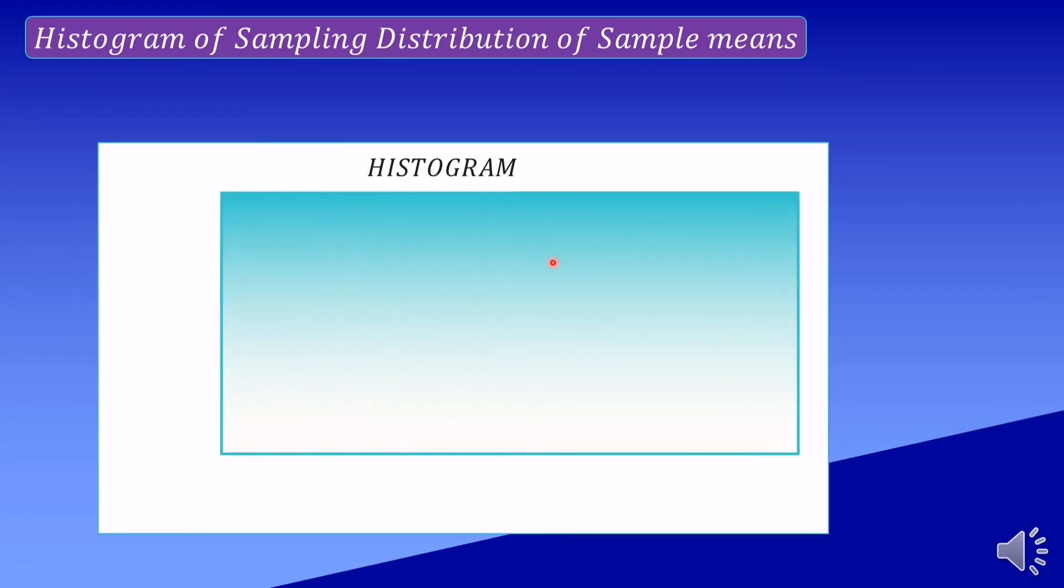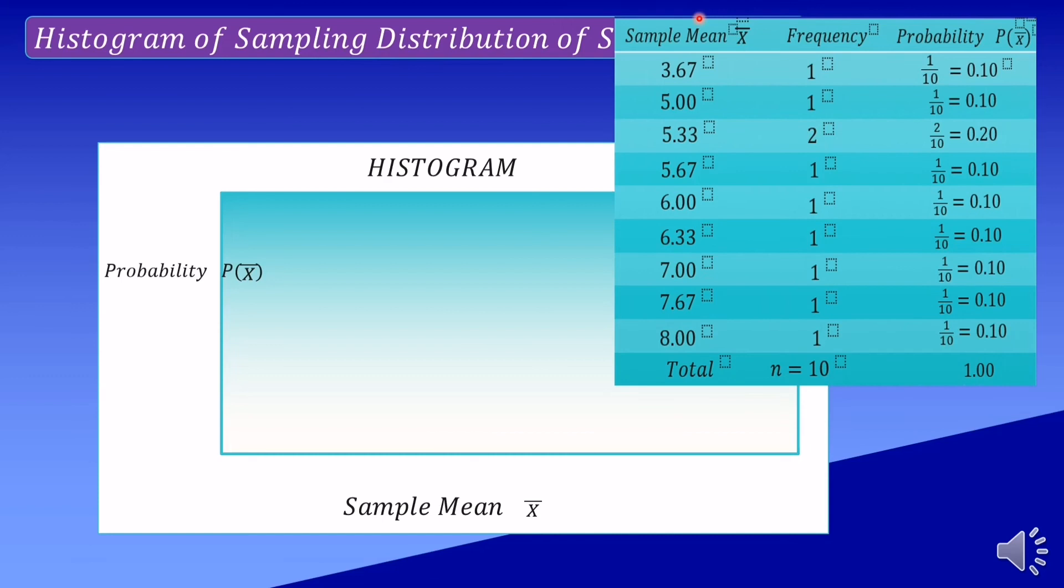Lastly, draw a histogram of sampling distributions. On the y-axis, the probability of the sample mean or P of x-bar, and the sample mean on the x-axis. We have here the three columns from earlier: the sample mean, frequency, and probability. The number line here is 1 over 10 and 2 over 10, and the other probabilities with the same value. For the sample means, we have 3.67, 5.0, down to 8.0.